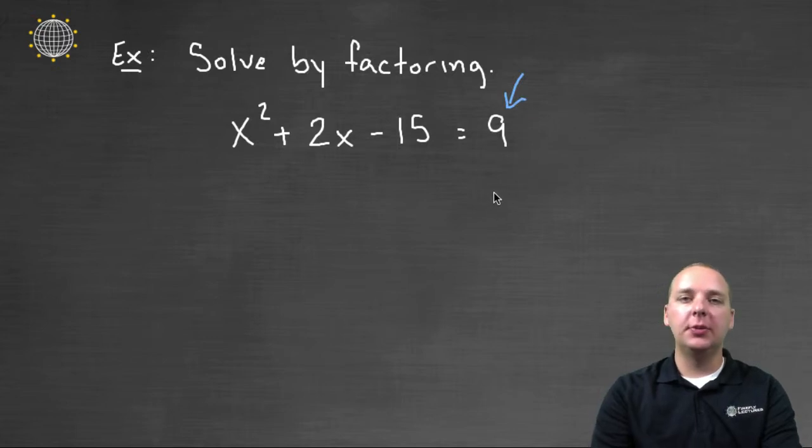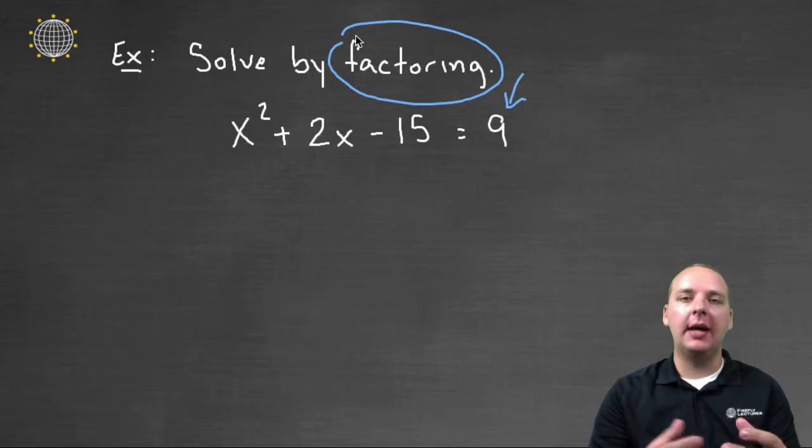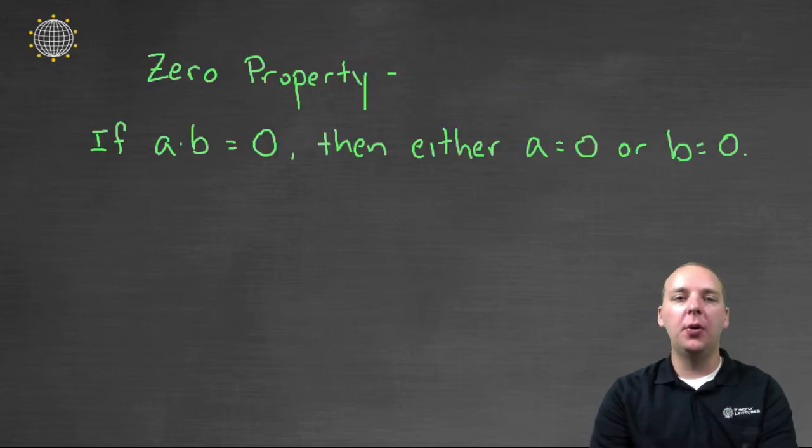And the reason that's important is the whole groundwork behind solving equations by factoring is something called the zero property. This is what everything hinges on. We can't emphasize this enough. It hinges on the fact that if a product equals zero, then guaranteed either the first factor or the second factor, one of them has to be zero. That's what everything hinges on.